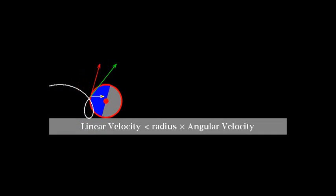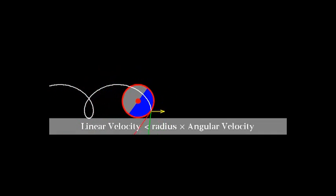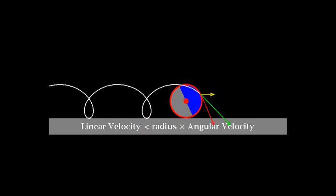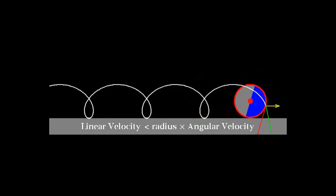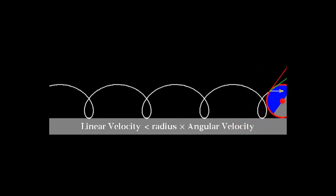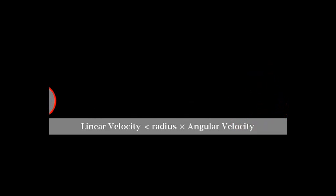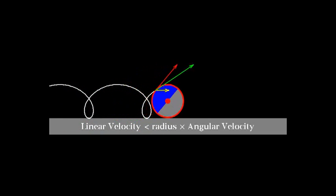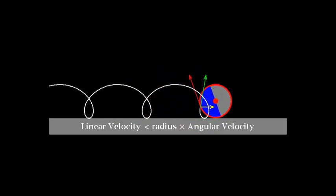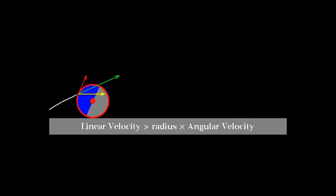Linear speed v is less than r omega. The yellow arrow representing v is shorter than the red arrow representing r omega. The point of contact of the disk with the surface has a non-zero velocity directed leftward. Notice again the green vector's direction at the moment of contact with the floor is leftward.